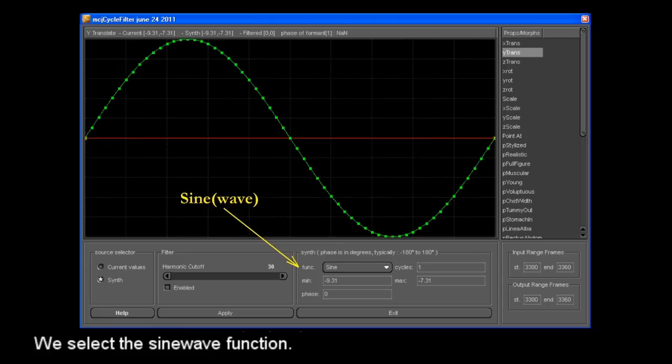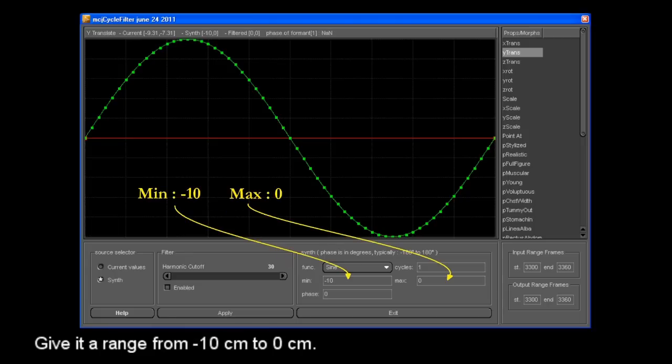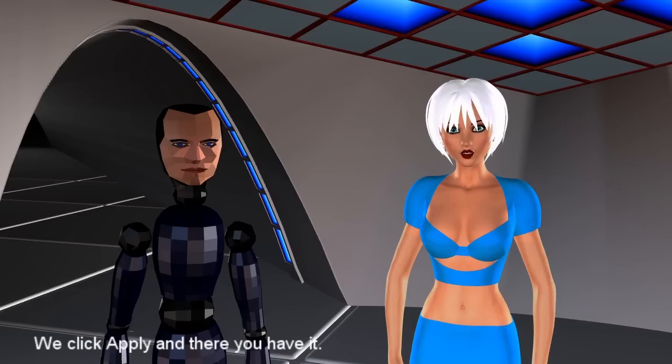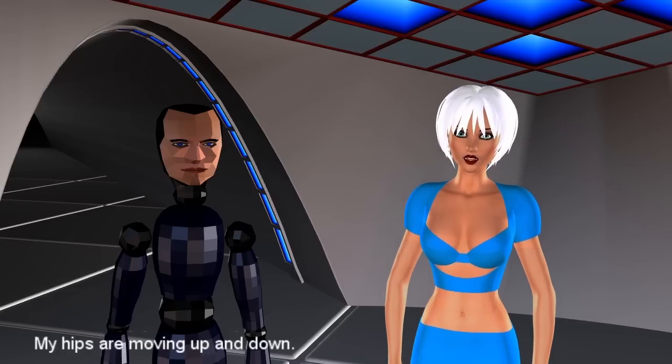We select the Y translate property, we select the sine wave function, and give it a range from minus 10 cm to 0 cm. We click apply and there you have it, my hips are moving up and down.